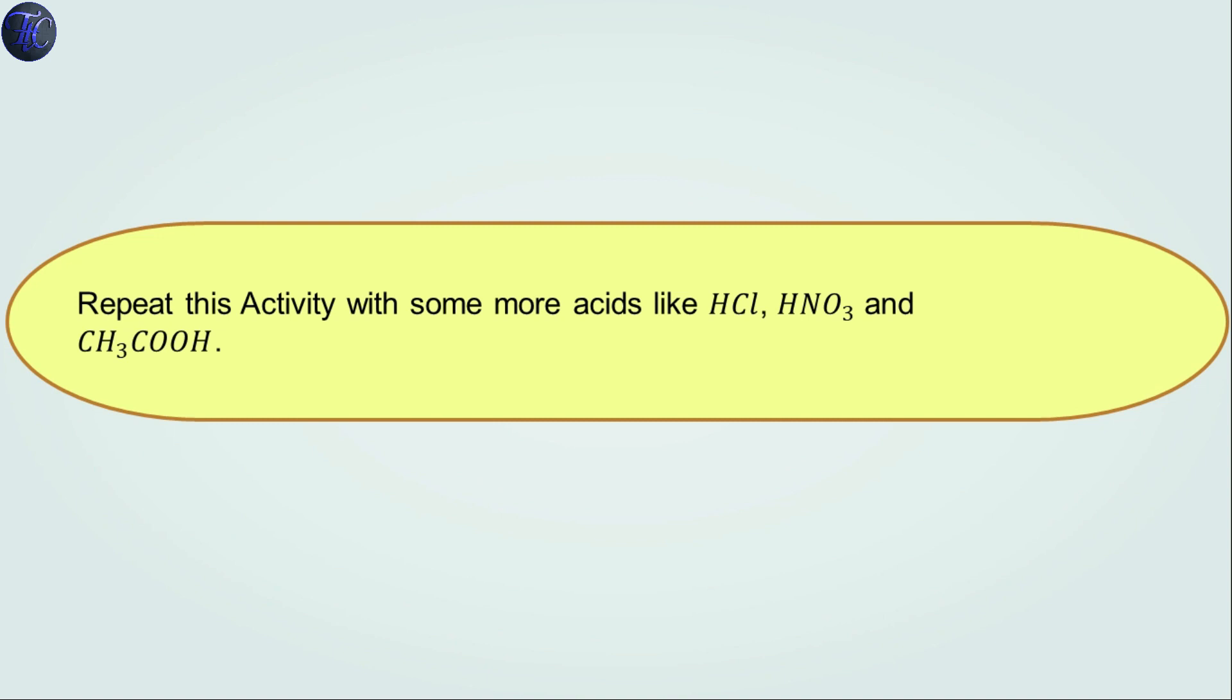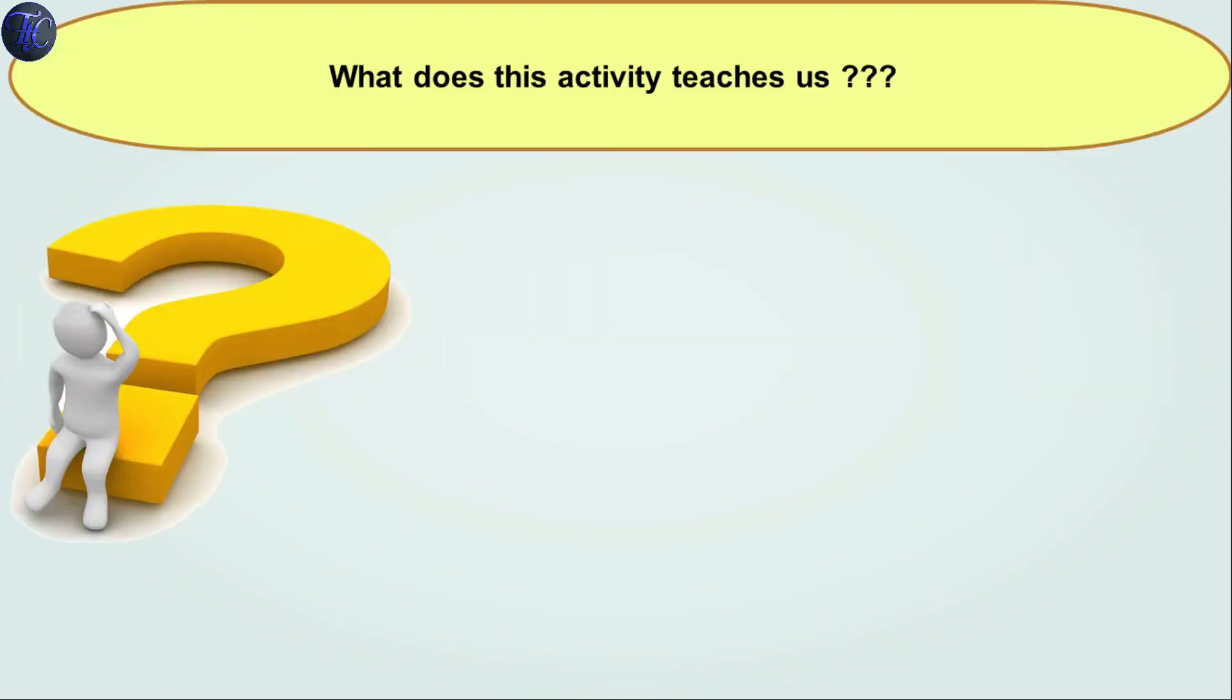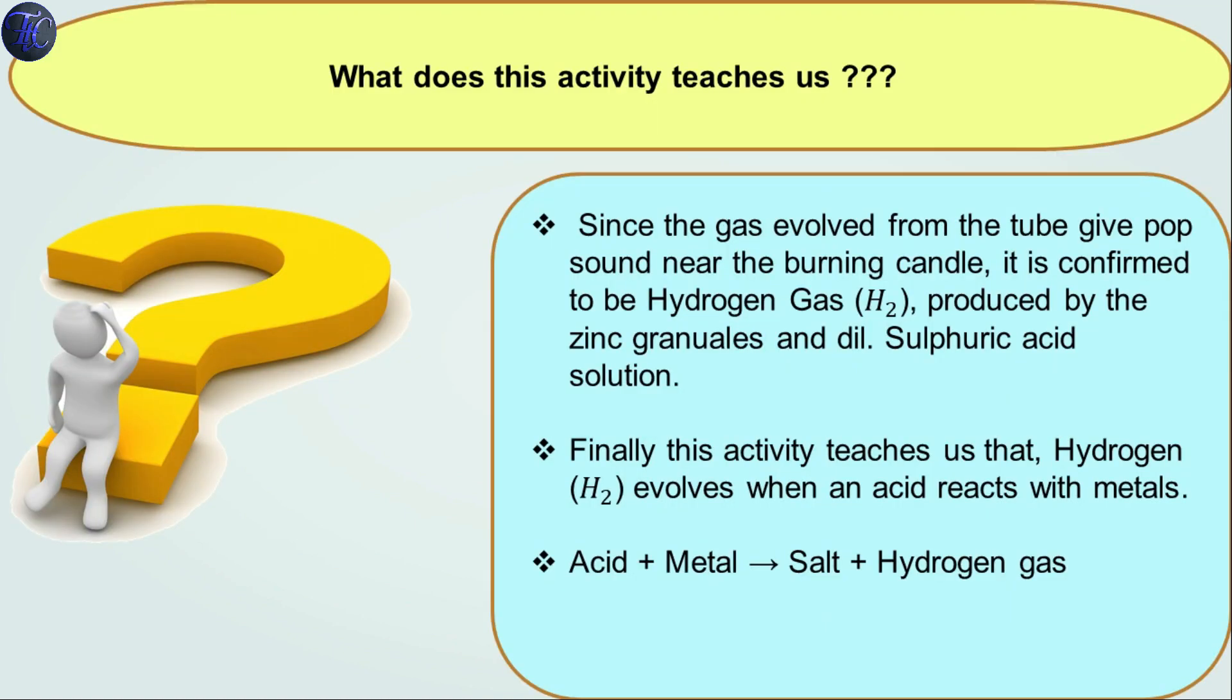Now repeat this activity with some more acids like HCl, HNO3, and CH3COOH. What does this activity teach us? Since the gas evolved from the tube gives a pop sound near the burning candle, it is confirmed to be hydrogen gas produced by zinc granules and dilute sulfuric acid. This activity teaches us that hydrogen gas is evolved when an acid reacts with metal.